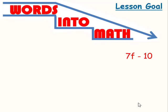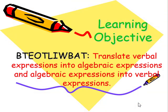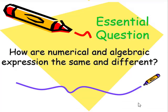And when we have the algebraic expression 7f minus 10, we want to be able to write it in words. A learning objective for today is by the end of this lesson, I'll be able to translate verbal expressions into algebraic expressions and algebraic expressions into verbal expressions. Our central question is, how are numerical and algebraic expressions the same and different?